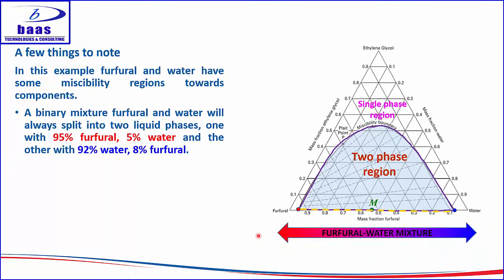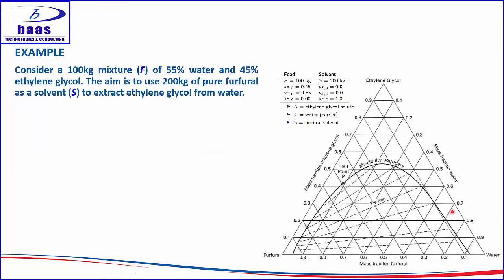Let's look at a different example involving furfural and water. Furfural and water show some miscibility toward their respective pure component vertices. A binary mixture of furfural and water will always split into two phases: one containing 95% furfural and 5% water, and another containing 92% water and 8% furfural.